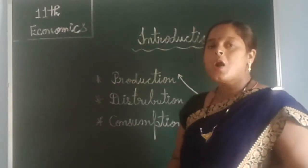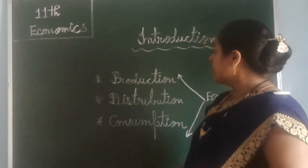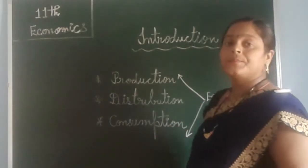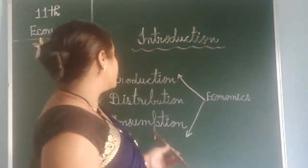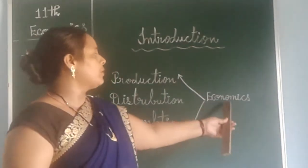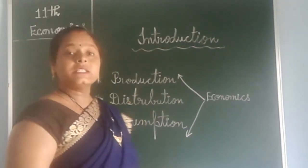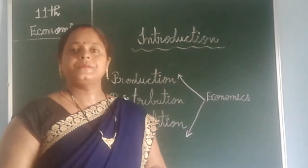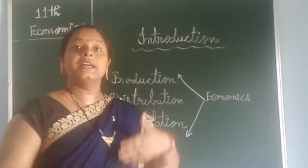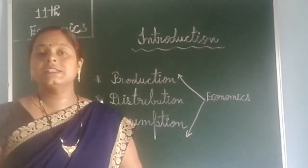And after distribution, what is the condition of consumption? The third one is consumption — things we have produced and distributed in society, and then how consumers have consumed that product. We will also learn the importance and behavior after consuming things, and what is the direct effect on the public. We will learn this in economics.